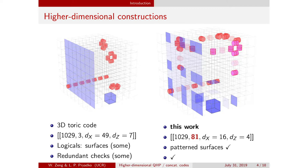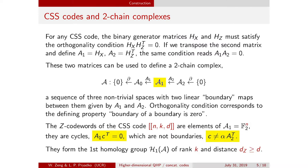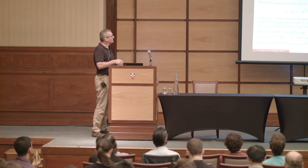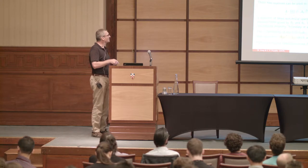So this is the math part that I finally learned a little bit. We're talking only about CSS codes — Calderbank-Shor-Steane — and you have a couple of binary matrices whose rows are orthogonal. All my linear algebra is done mod two. I just write the product of two matrices, which is orthogonal mod two. If we transpose the second matrix and define matrices HX and HZ-transpose, then the same orthogonality condition can be read as a product of two matrices A1, A2 equals zero.